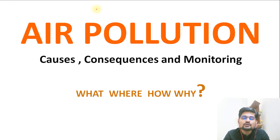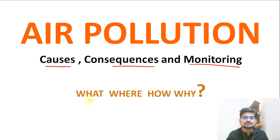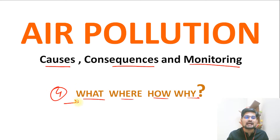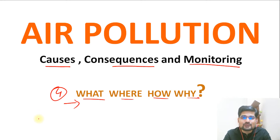In this situation, we need to understand this entire scenario of air pollution. The important things we need to discuss are the causes, consequences, and the ways that we monitor. And importantly, what, where, how and why - these four questions are important to answer when we talk about air pollution. In this session, let's understand what is air pollution, where is it happening mostly, how is it happening, what are the reasons for it, what can we do about it, and how it is being monitored.